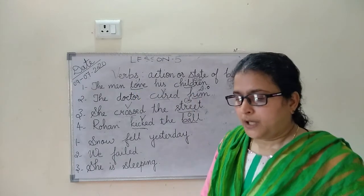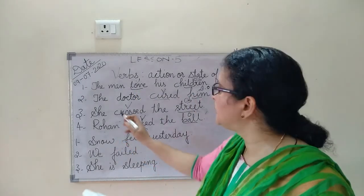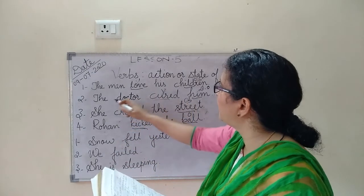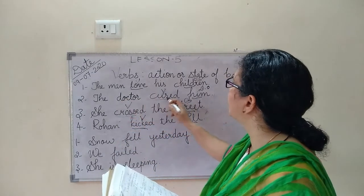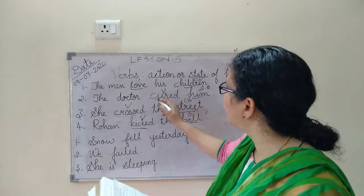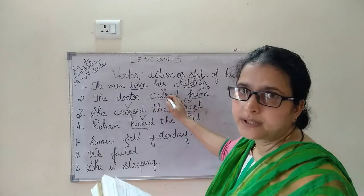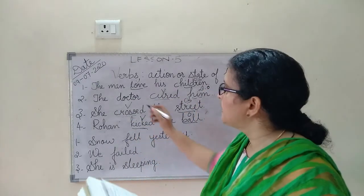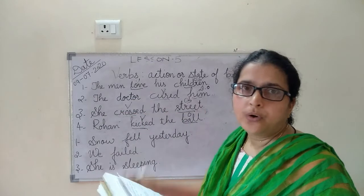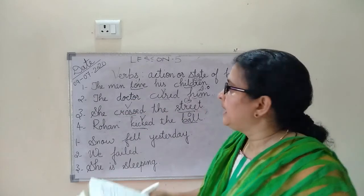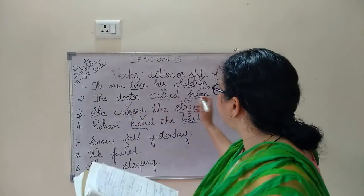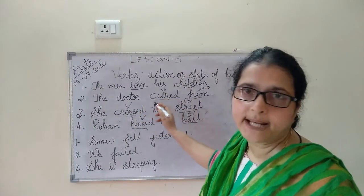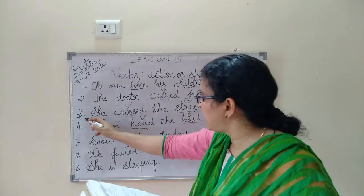The second example: The doctor cured him. The doctor is the subject, cure is the action verb, and him is the direct object. The sentence is complete, so cure is a transitive verb.